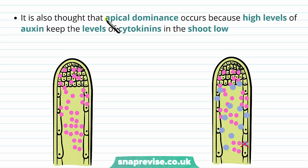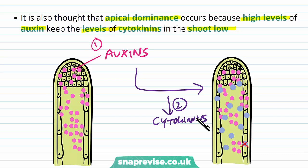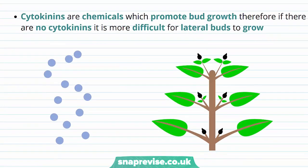It's also thought that apical dominance occurs because high levels of auxins help to keep the levels of another molecule known as cytokinins in the shoot low. So auxins have two roles: they not only cause the release of abscisic acid, but they also decrease the amount of cytokinins. Cytokinins are chemicals found in the plant which promote bud growth. Therefore, if auxin is present and inhibiting cytokinins from being made, there will be no cytokinins, and it will be very difficult for lateral buds to grow.